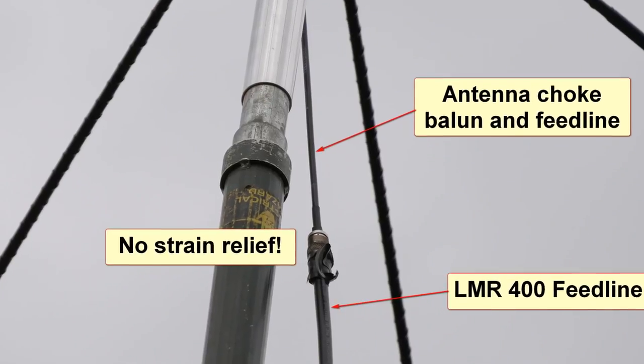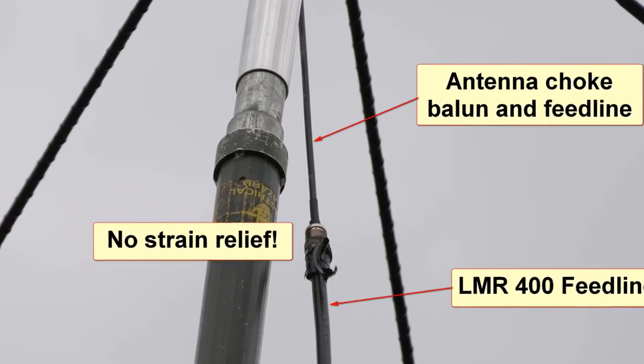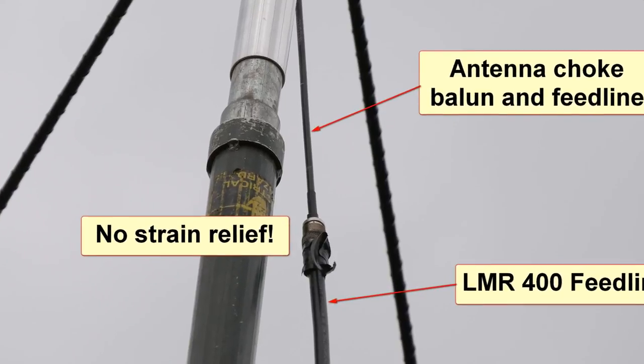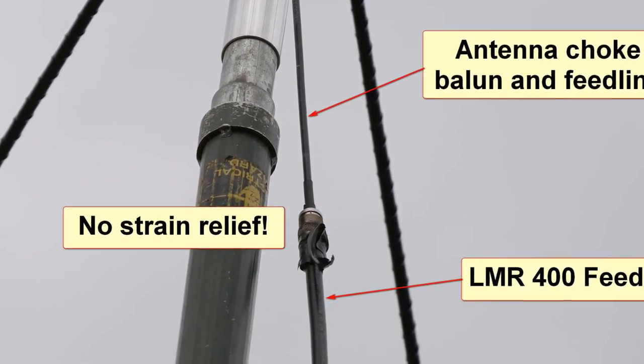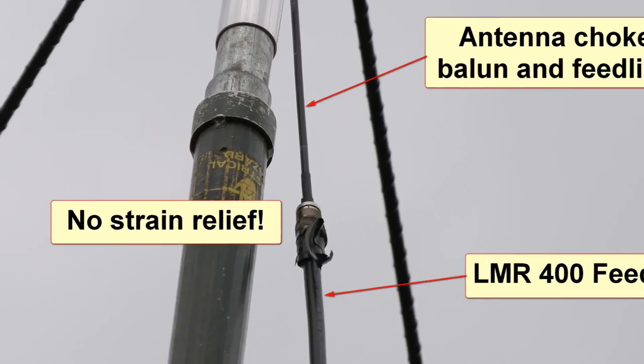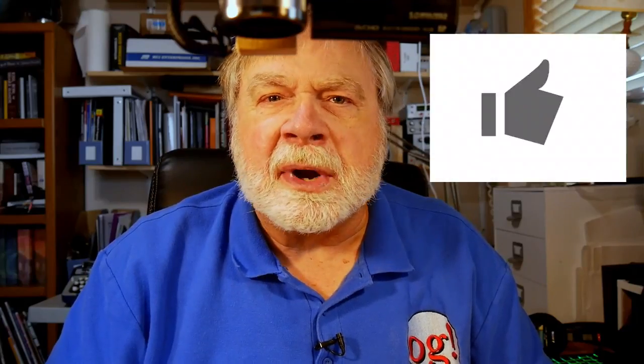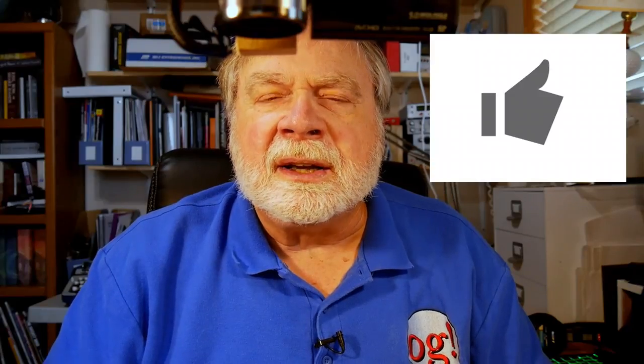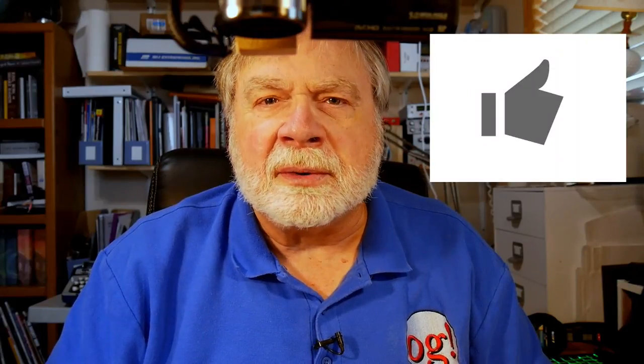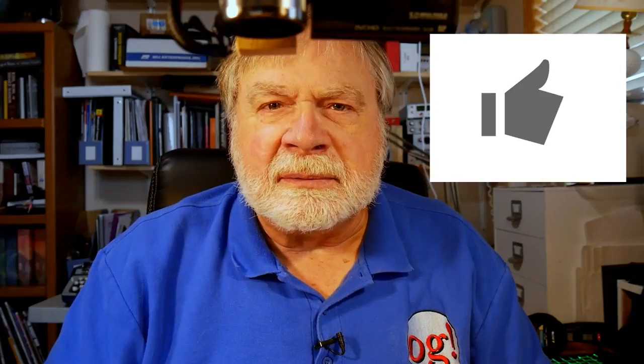Now here's a bad example and it's a current one I'm afraid. This is the octopus antenna again a piece of LMR 400 and it is just hanging and this thing gets whipped around in the wind and needs some sort of strain relief up there.